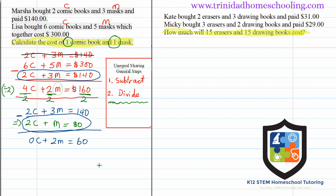So $60 represents 2 masks. To find 1 mask: 60 divided by 2 equals $30. Therefore, 1 mask costs $30.